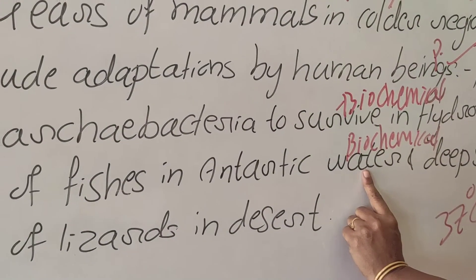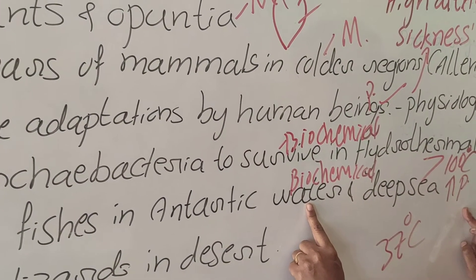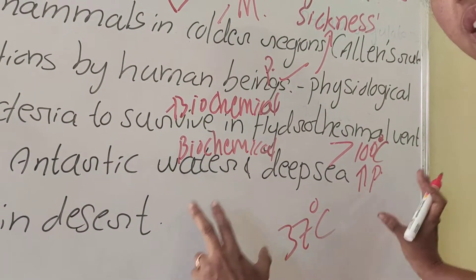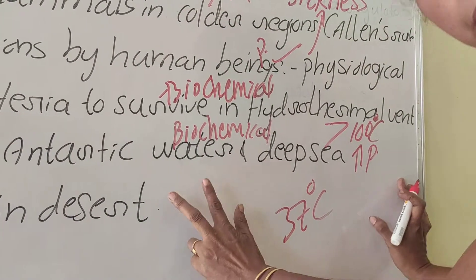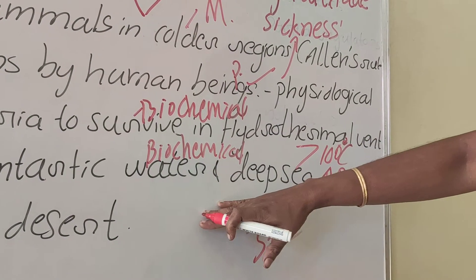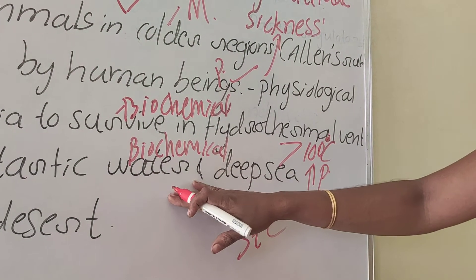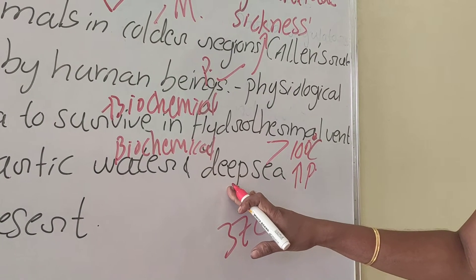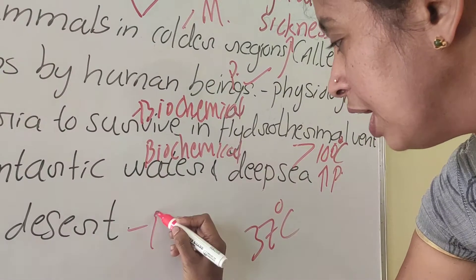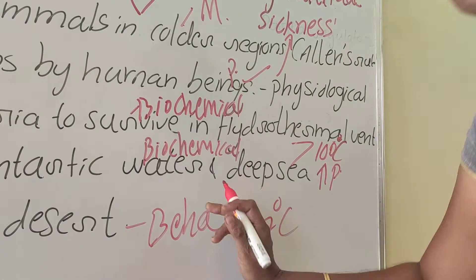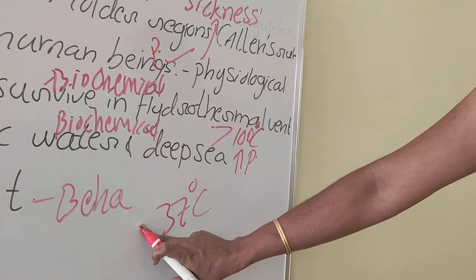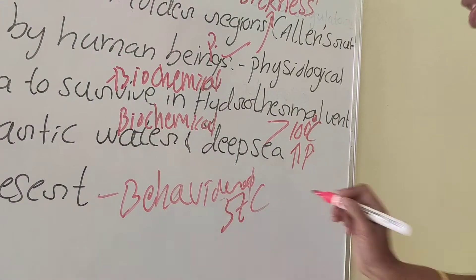In those extreme abiotic conditions — below 0°C temperature and pressures 100 times that of normal — plenty of organisms still exist. The credit goes to the special chemicals present in their cell cytoplasm. This is biochemical adaptation. Behavioral adaptation is also possible — adaptation is morphological, physiological, and behavioral.